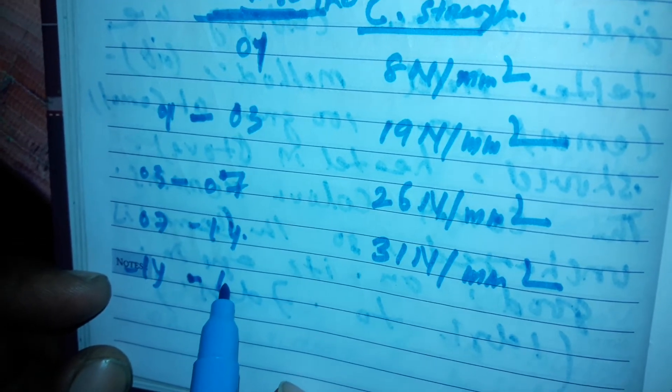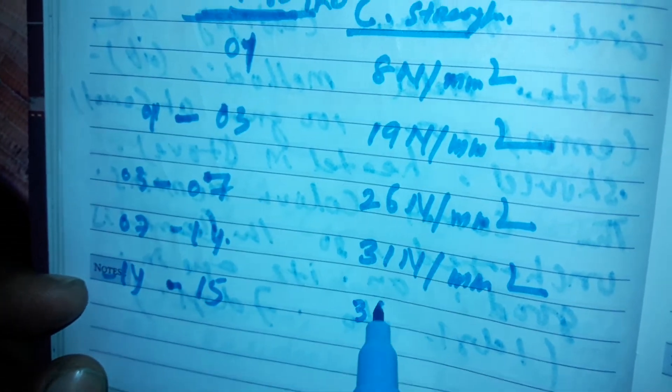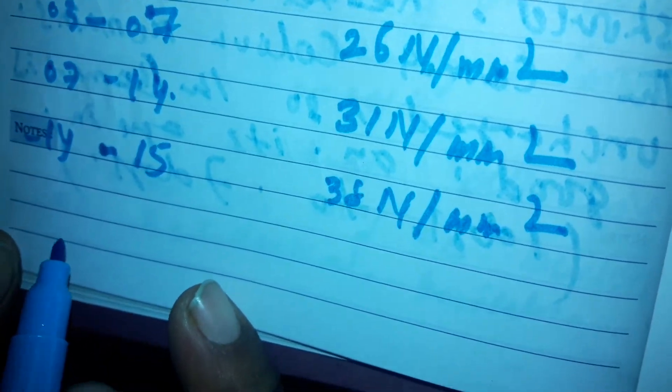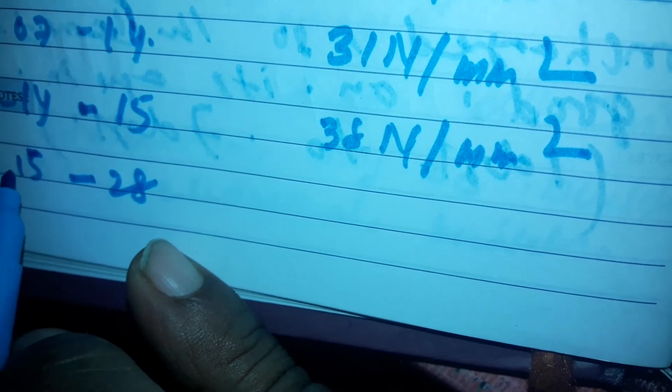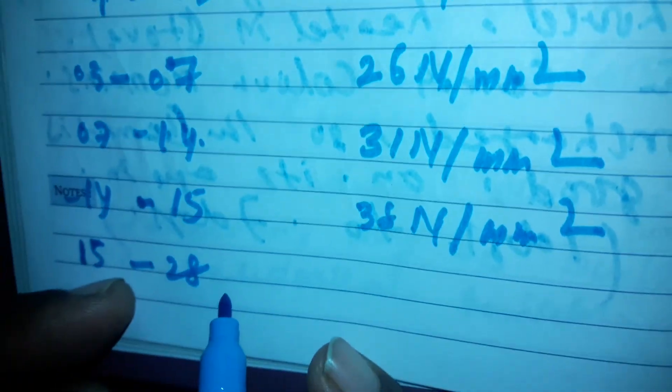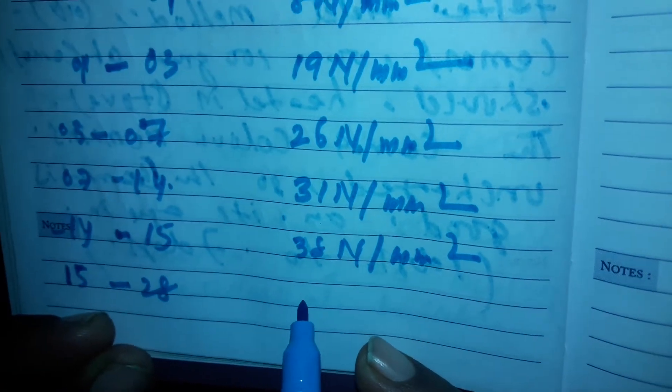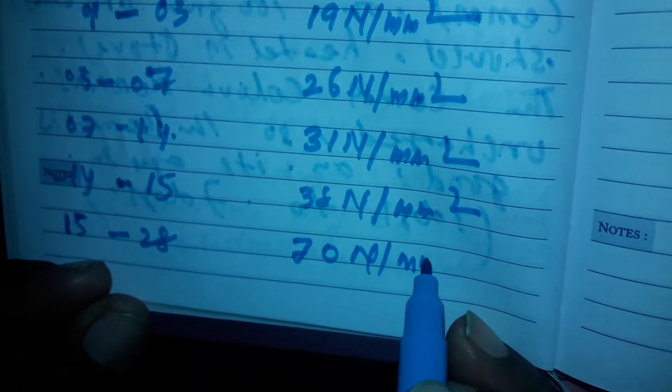At 14 to 15 days, the strength must increase to 33 Newton per mm square. And from 15 days to 28 days, the strength must be 70 Newton per mm square.